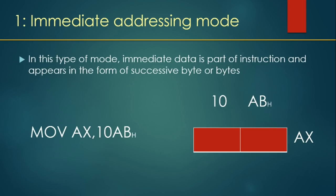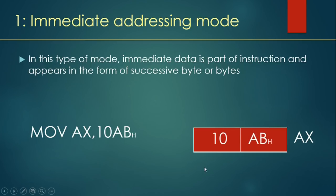Firstly, we will see the immediate addressing mode. In this type of mode, immediate data is part of the instruction and it appears in the form of successive byte or bytes. So whatever data you are going to copy is given inside the instruction itself. For example, MOV AX, 10AB — the data 10AB is given in the instruction and will be copied to the AX register. After execution, the value 10AB will be copied to AX.